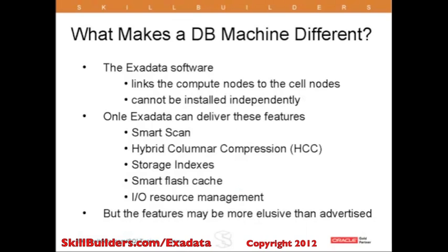A database machine consists of two sets of Linux machines. There's one set we call the compute nodes, which have masses of CPU, masses of RAM, and they run your database instances. Then there's a second set of Linux machines that have vast amounts of disk space — these are your storage tier — and it's the Exadata software that links the compute nodes to the cell nodes.